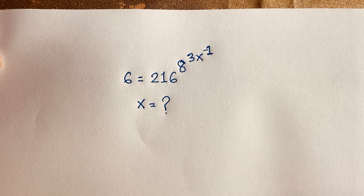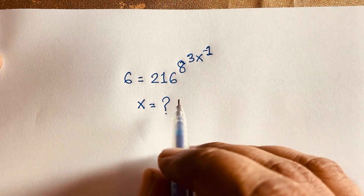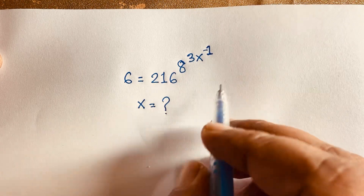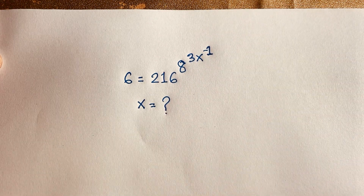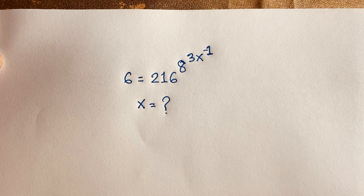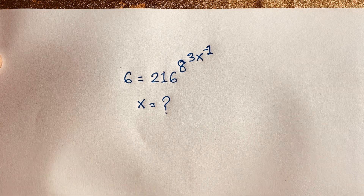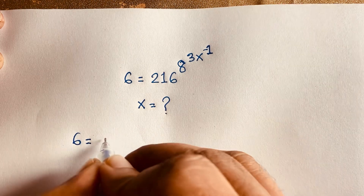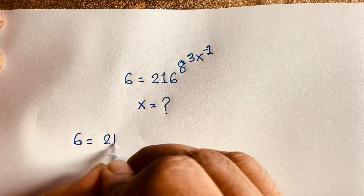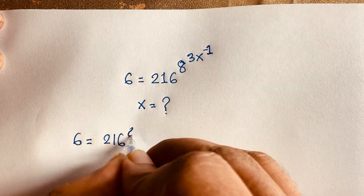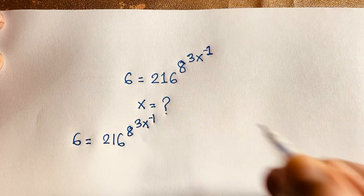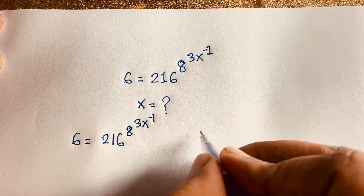Hello everyone. How to solve this interesting maths question: 6 is equal to 216 to the power 8 to the power 3x inverse. x is equal to what? So let's start.